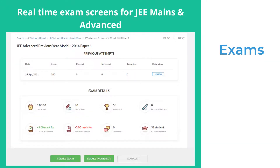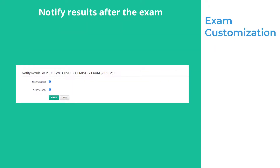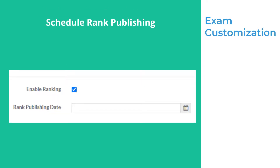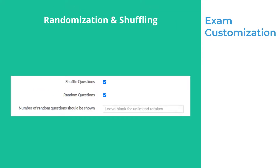Ranks are considered only for the first attempt. Admins can seamlessly administer exams — for example, if a student has accidentally submitted the exam, admins can extend their time. Students can restart from the same place where they left off. Exam results can be notified via SMS or email. Rank publishing can be scheduled so students can check ranks only from a specified time. Score, analytics, and answers can be disabled and enabled whenever the admin chooses. Randomization and shuffling of questions is also supported.